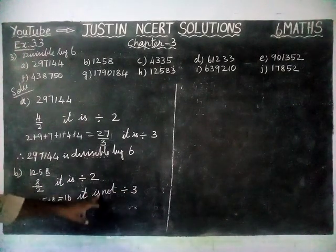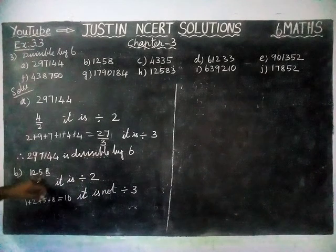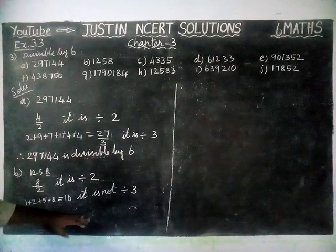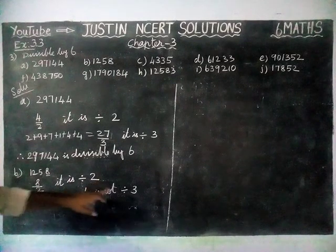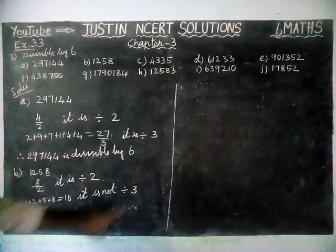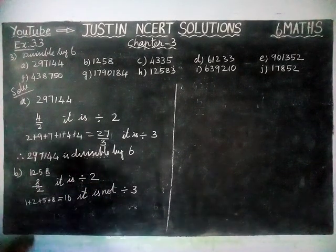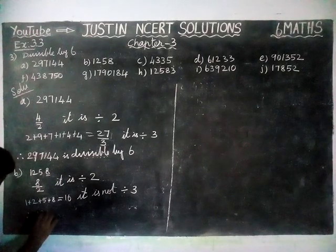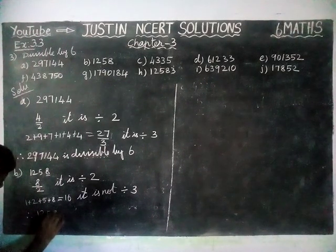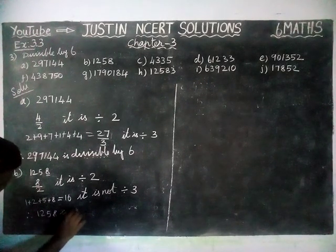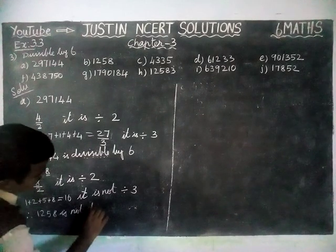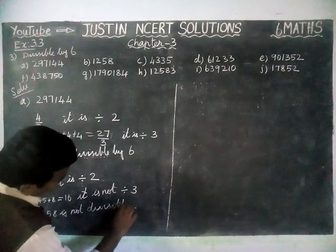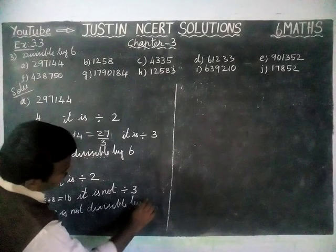If the given number is divisible by both 2 and 3 only, then the number is divisible by 6. But here, it is divisible by 2 but not by 3. Therefore, this number is not divisible by 6. Therefore, 1258 is not divisible by 6.